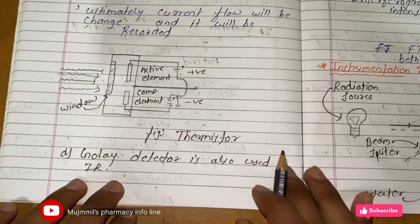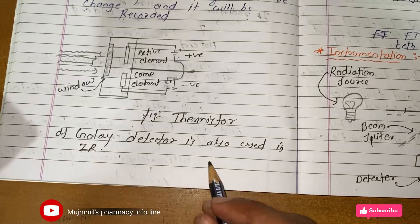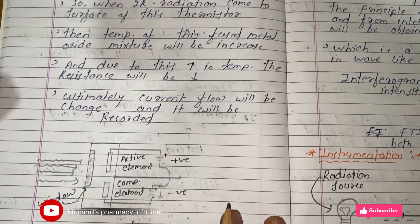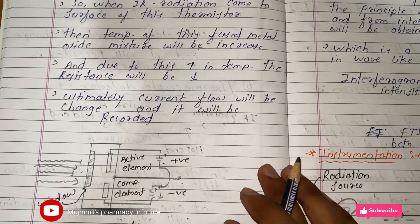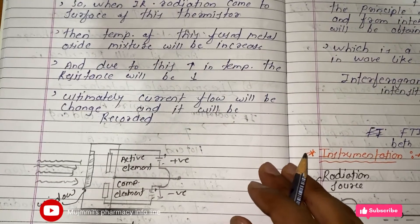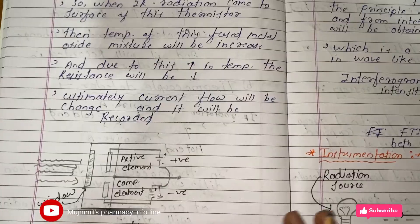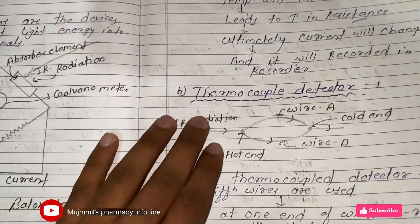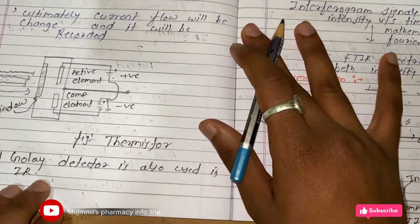The Golay detector is also used in IR. So in MCQs, if you are asked what detectors are used in IR spectroscopy, there are four: first, the bolometer; second, the thermocouple detector; third, the thermistor; and fourth, the Golay detector.